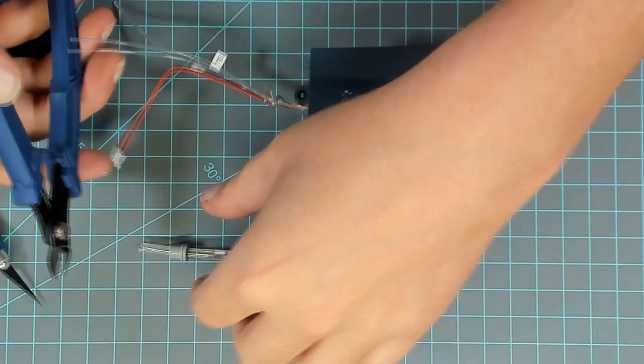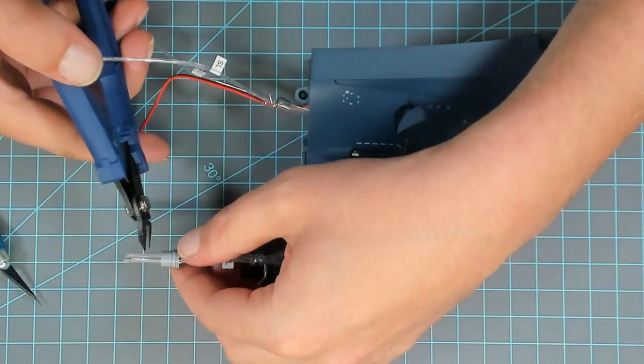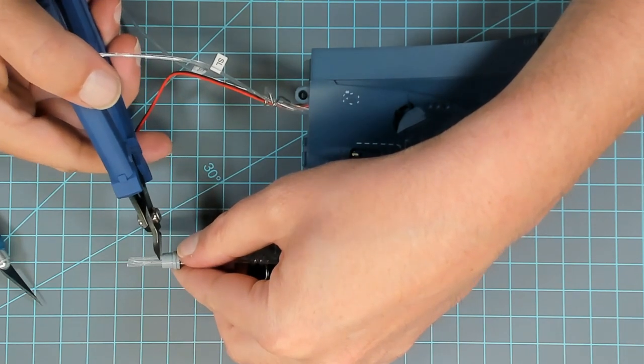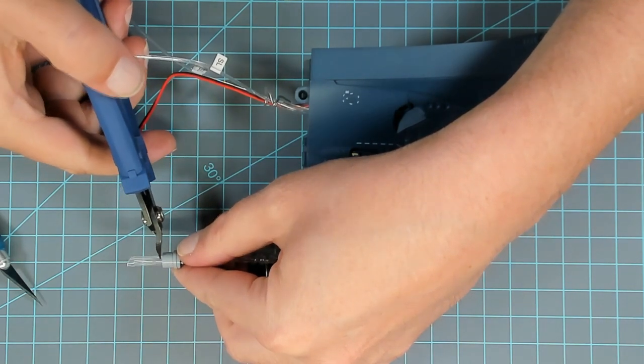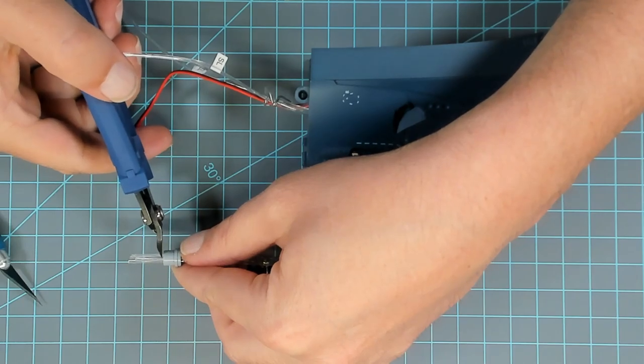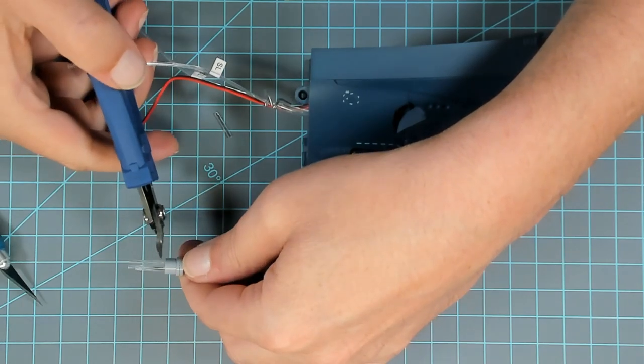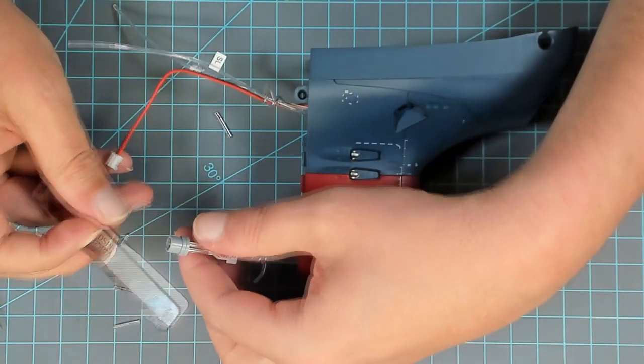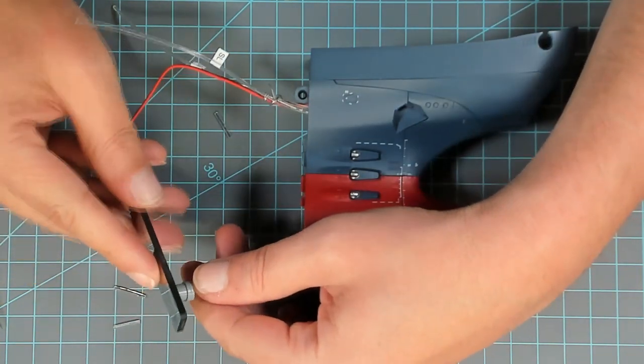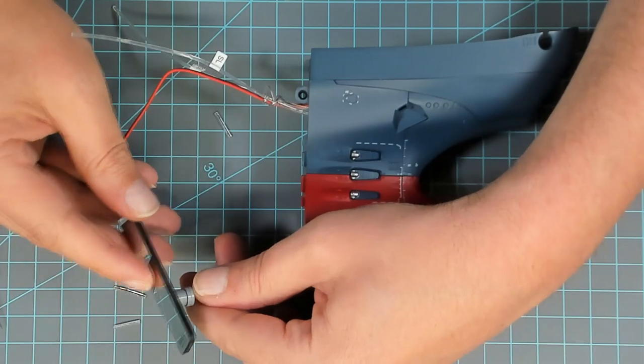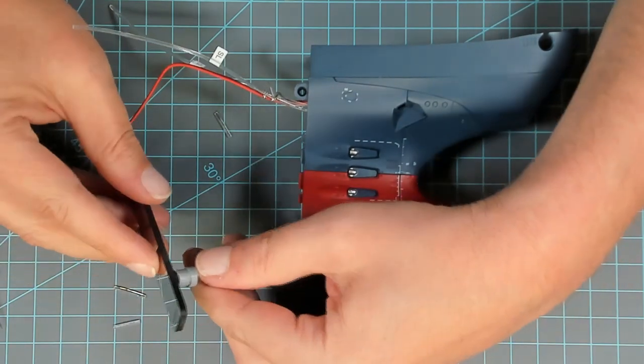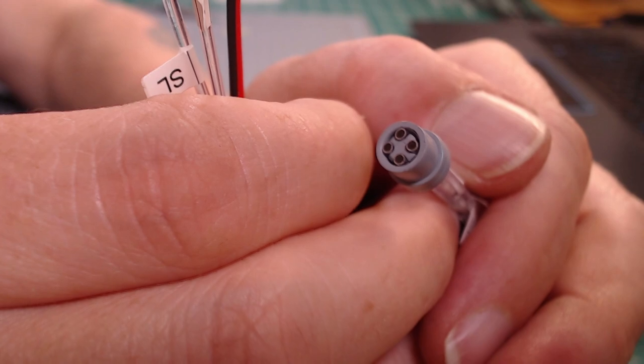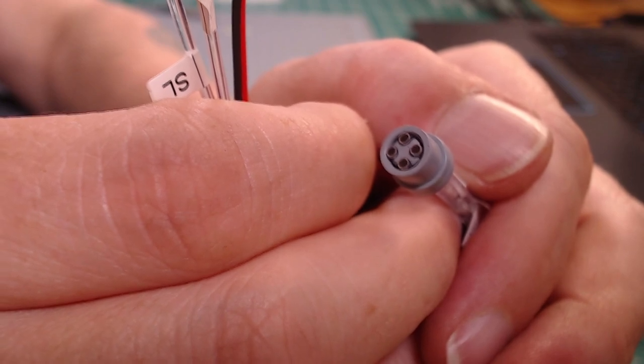So I'm going to take our nippers and we're going to cut each fiber close to the end of this cap and polish up the ends. So there's our fiber all polished up and nice and neat.